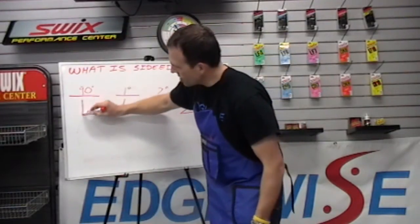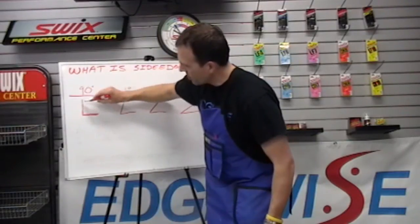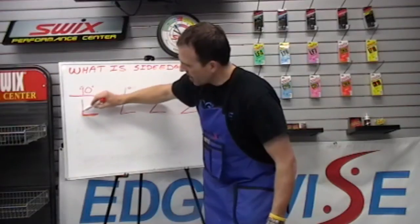90 degree is basically just what it says, a 90 degree angle. This is the side edge bevel and the base edge bevel and that's at a 90 degree. That's not a very sharp edge.